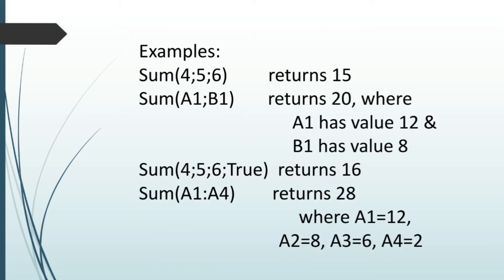Some examples of the function sum are sum 4;5;6. Here, there is a semicolon in between the values. The arguments are separated by the semicolons, not the commas. So sum 4 semicolon 5 semicolon 6, it returns the value 15. That is sum of 4, 5 and 6.